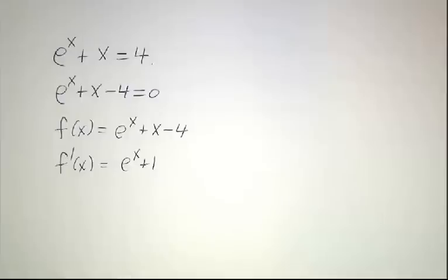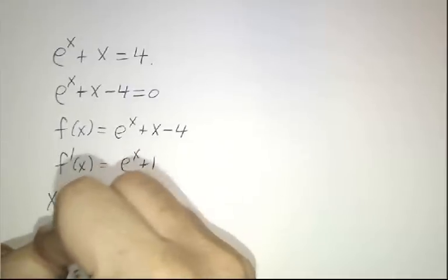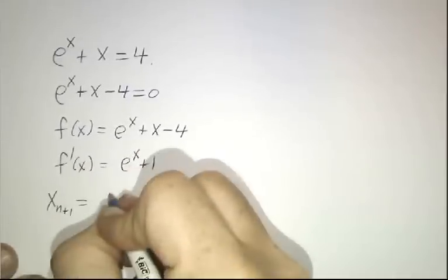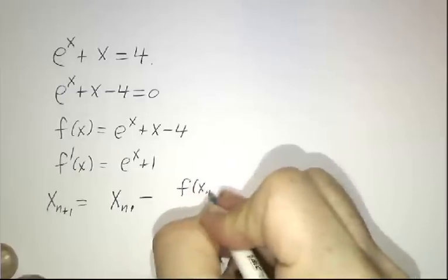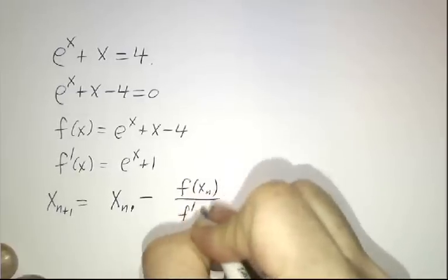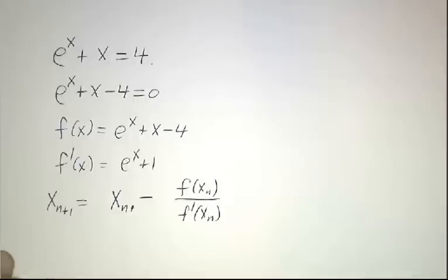And Newton's method says our new guess is gonna be our old guess minus f of the old guess divided by f prime of the old guess. So let's make our table and see what we can do with that.